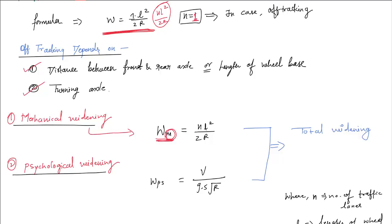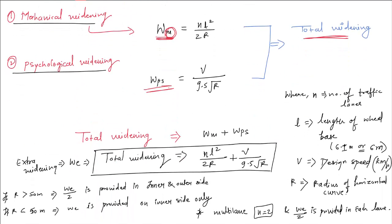The second one is psychological widening. Psychological widening: WPS = V / (N × 9.5 × √R). These two widenings together give the total widening. Total widening equals mechanical widening plus psychological widening, i.e., WE = WM + WPS = L² / 2R + V / (9.5 × √R).